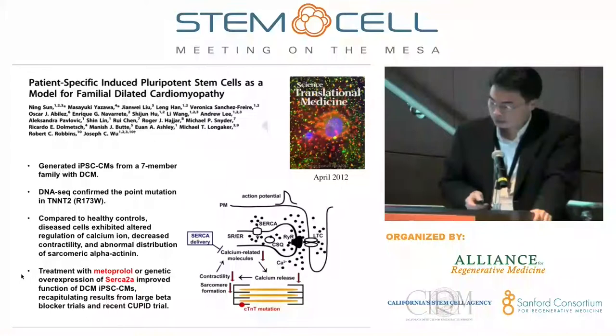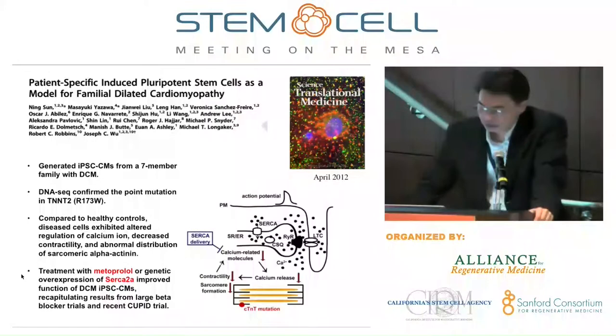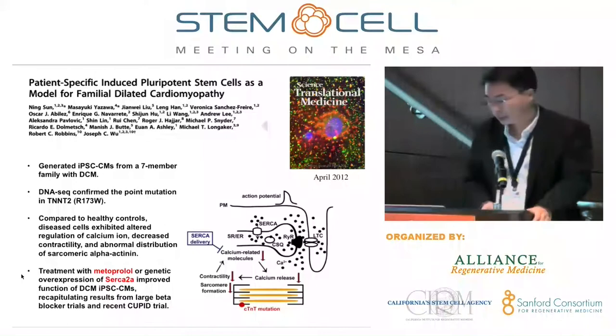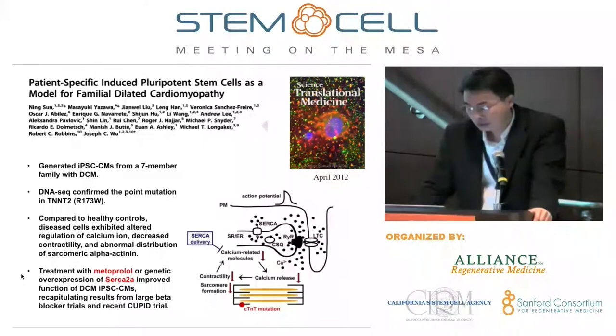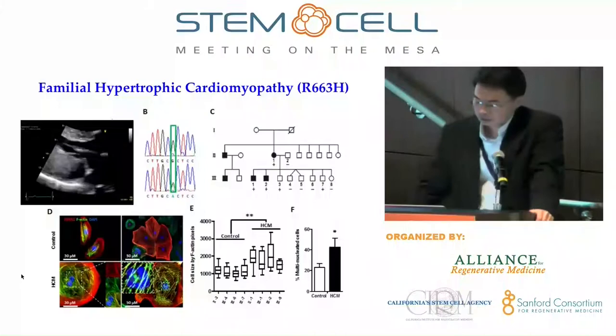We did quite a bit of study — this took us about two years to complete. To summarize: we generated iPSC lines from a seven-member family, did DNA sequencing to identify the mutation, and worked out the mechanism. Of relevance is that we can use common medications such as metoprolol, genetic overexpression of SERCA2A — which is in a clinical gene therapy trial in New York — and other agents to recapitulate results from large beta-blocker trials and the recent QBIT trial.